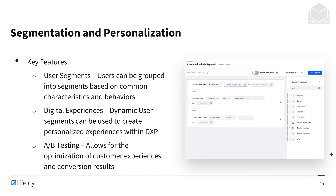Then we have segmentation and personalization. User segments is going to be our biggest feature — users can be grouped into segments based on common characteristics and behavior. We can customize across a whole different range, whether it's age, region, device, or several other factors. Dynamic user segments can be used to create personalized experiences with DXP, so I can be put into a segment that means I'll be getting tailored content that meets what I'm interested in. We also have A/B testing, which allows for the optimization of customer experience and conversion results — we can demo two different experiences for our users and find out which one's more engaging.